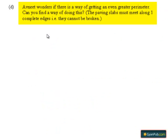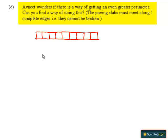Take part D. Avnit wonders if there is a way of getting an even greater perimeter. The paving slabs must meet along one complete edge — that is, they cannot be broken. First, let us arrange the given slabs side by side. We will get the arrangement as shown after arranging the slabs side by side, and we need to find the perimeter of this arrangement.